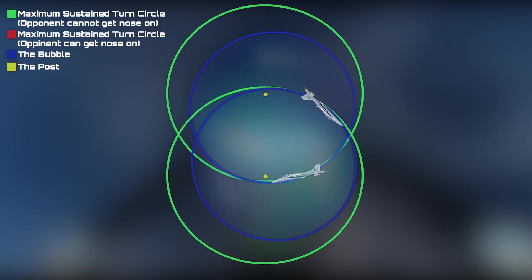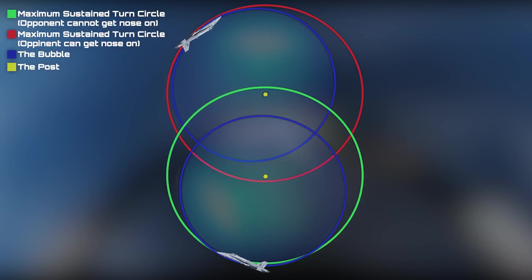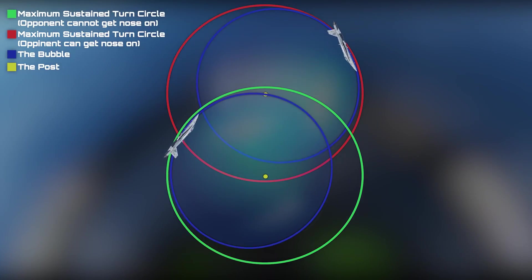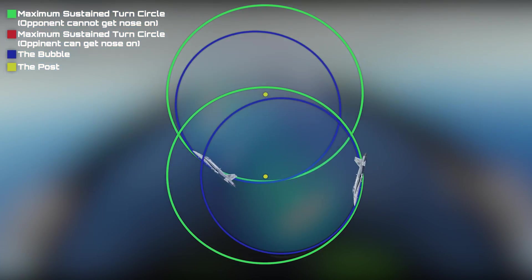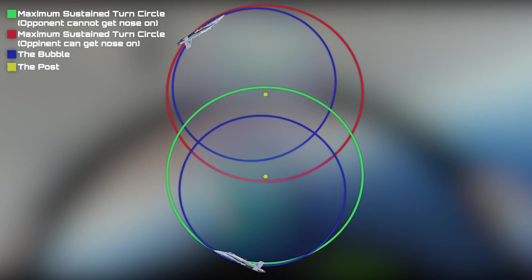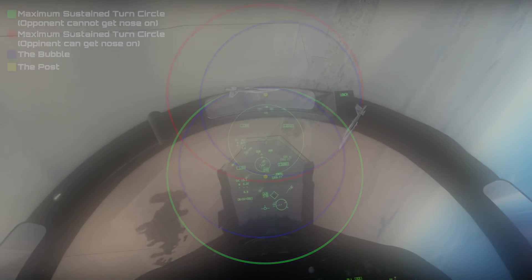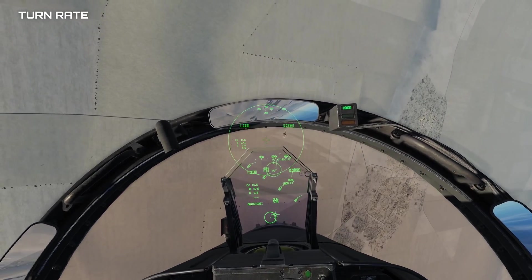When thinking of the bubble, reference it as a sphere rather than a circle as shown in most visual examples. In BFM, the safest place to be is inside your opponent's bubble, because they won't be able to point their nose at you. Adversely, you want to keep your opponent outside of your own bubble. In this series we will refer to the post and the bubble often.